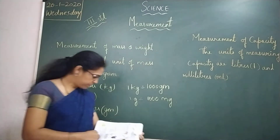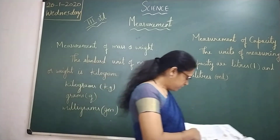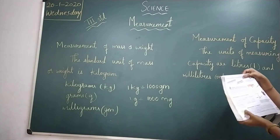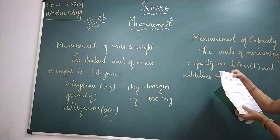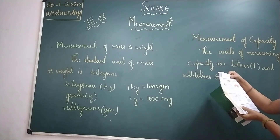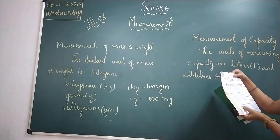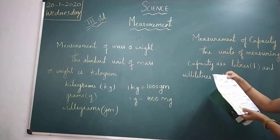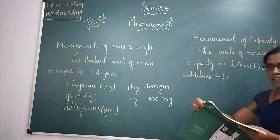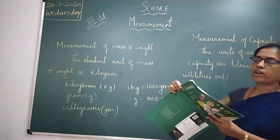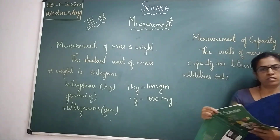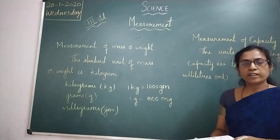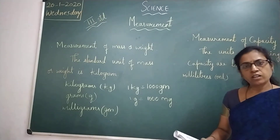Let us move on to the next topic: measurement of capacity. You can see in the picture here — there are different markings such as 100 ml, 250 ml, 200 ml on the container. The capacity of a container is the quantity of liquid it can hold.